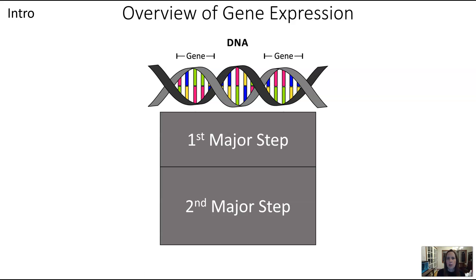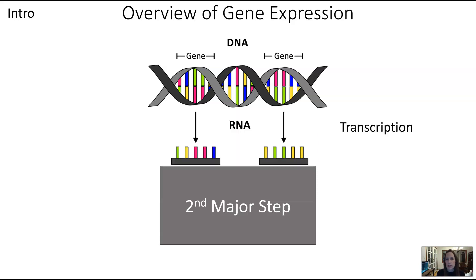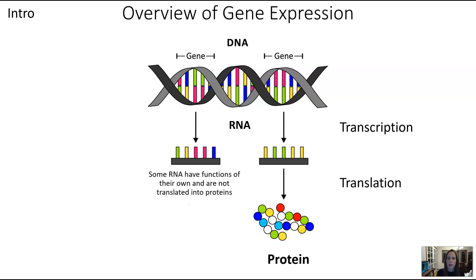At the top, we see a representation of DNA and a couple of genes. The first step of gene expression is transcription, where DNA is turned into RNA. The second step is where RNA is turned into protein. Note that not all DNA turns into protein — some RNA has functions of its own, so in some cases transcription occurs but that RNA won't be translated.